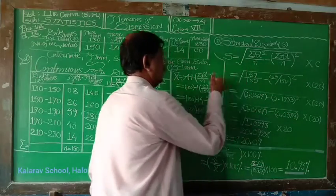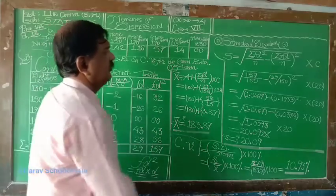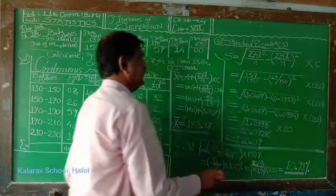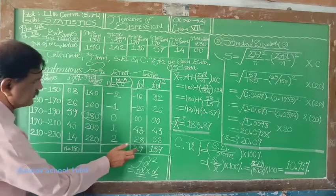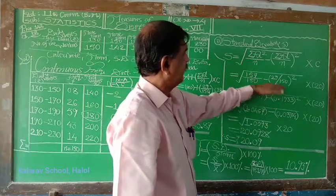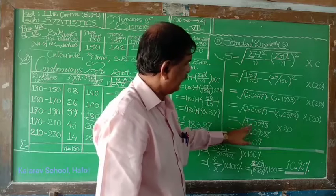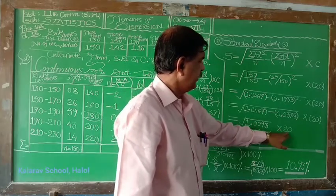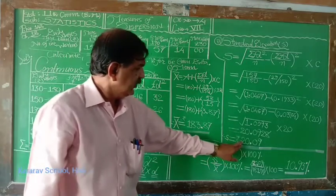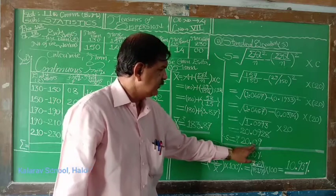157 upon n frequency total 150, minus 29 upon 150, 29 is total of fd. After simplification will give you answer root of 1.0093 into 20. Ultimately s means standard deviation is 20.09.